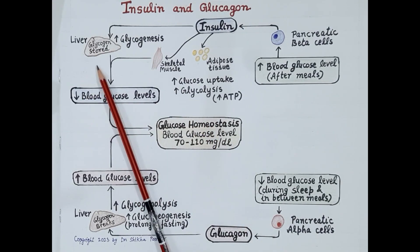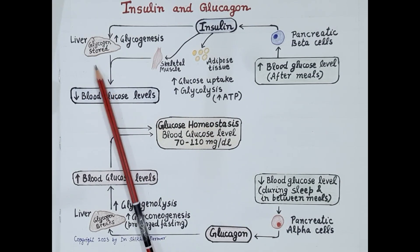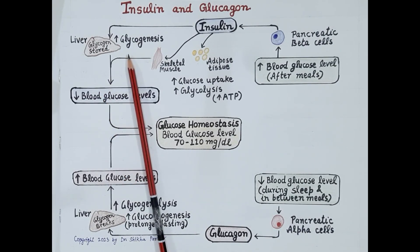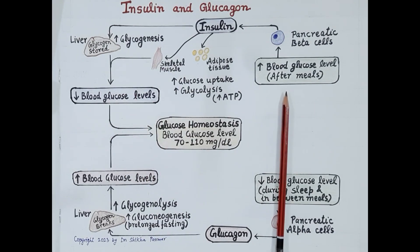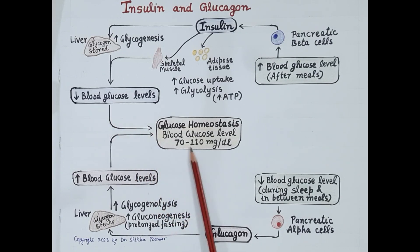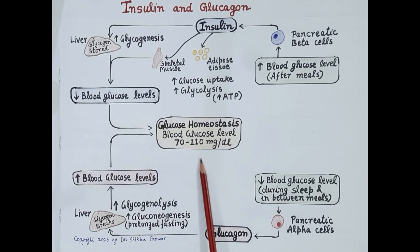Excess glucose is stored in the liver as glycogen, and glycogen is synthesized by the process of glycogenesis. In this way, increased blood glucose after meals reduces again and comes back to normal homeostatic levels. So insulin reduces blood glucose levels and maintains glycemic control.